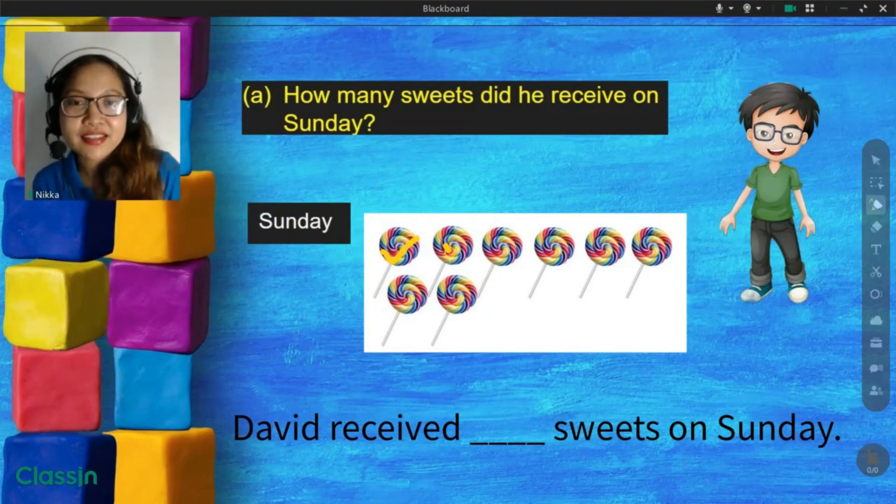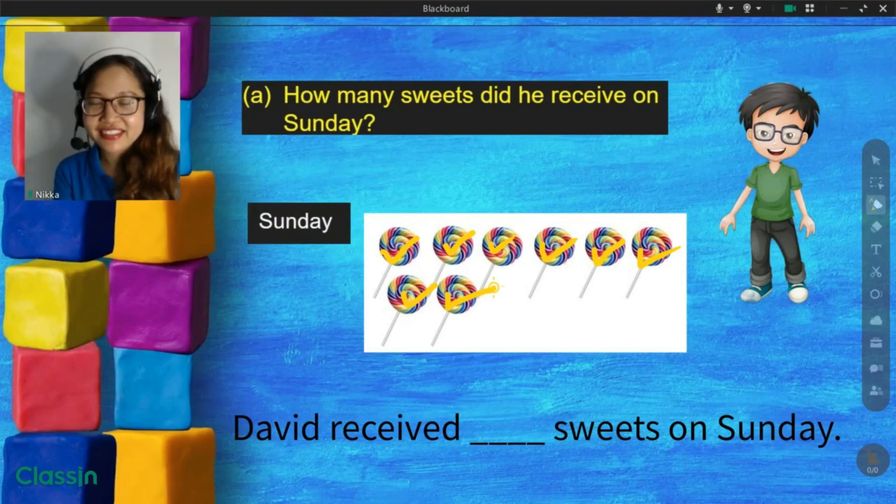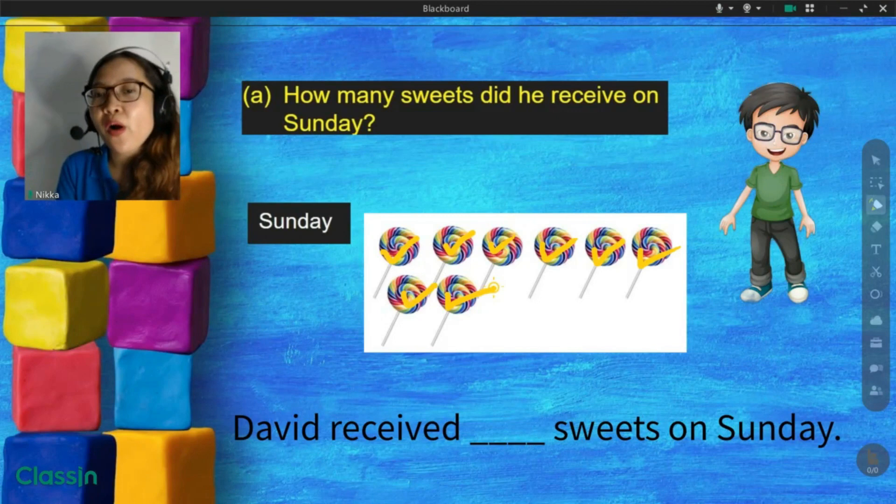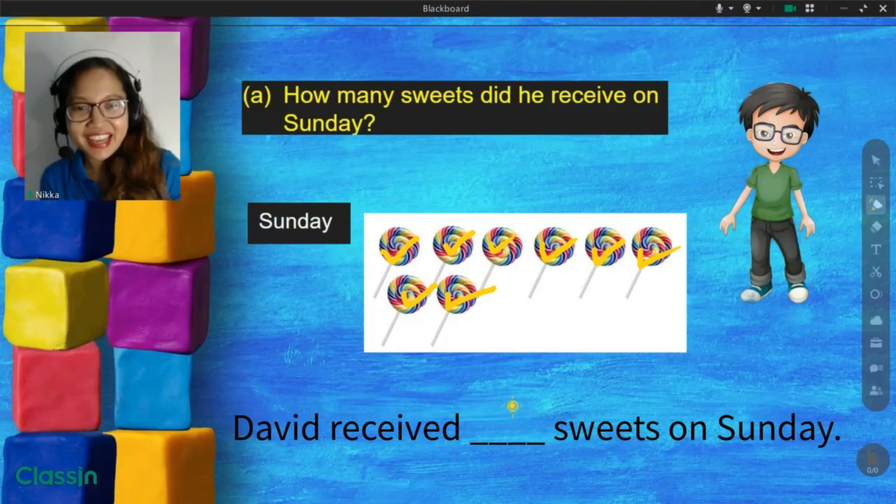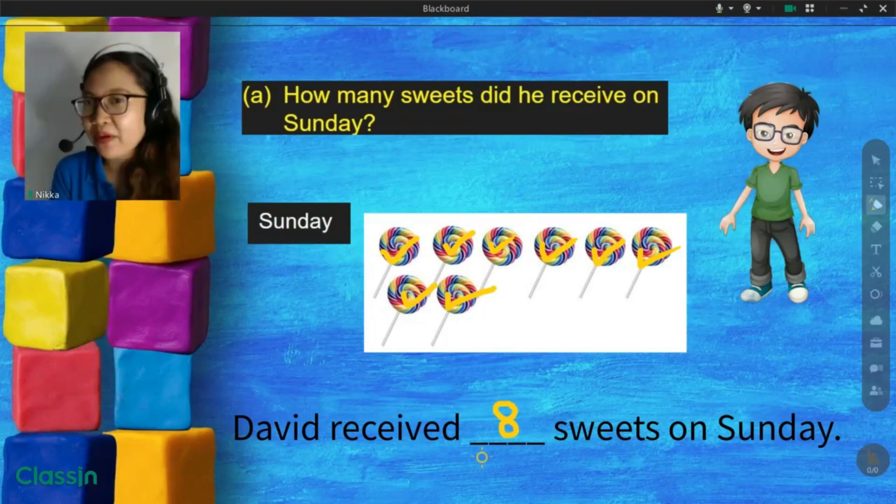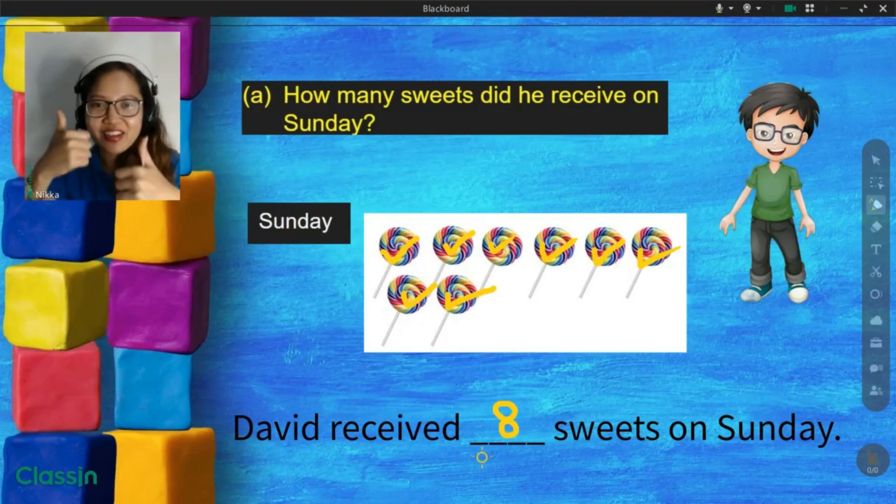1, 2, 3, 4, 5, 6, 7, 8. How many did David receive on Sunday? Great! 8. David received how many? 8 sweets on Sunday. Yay! Great!